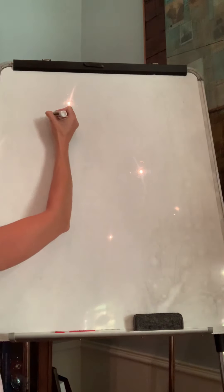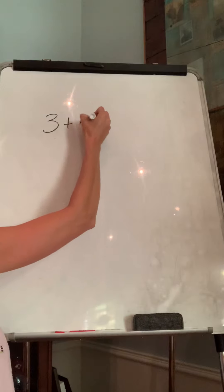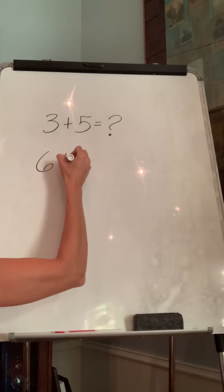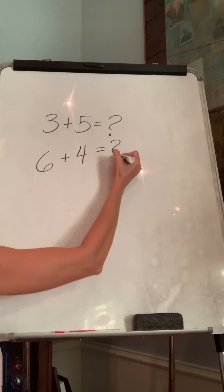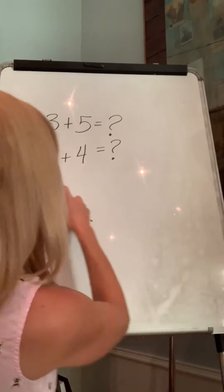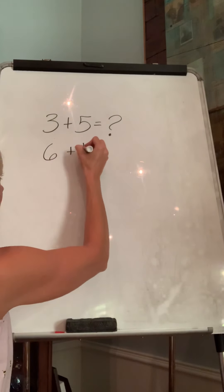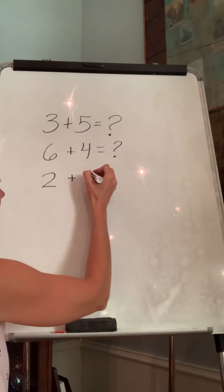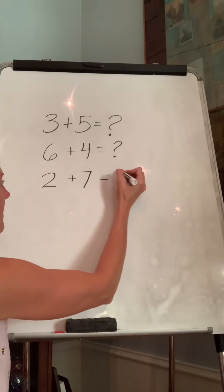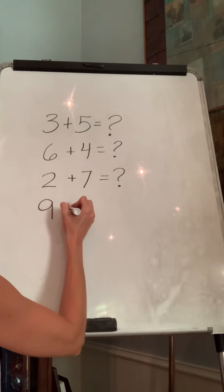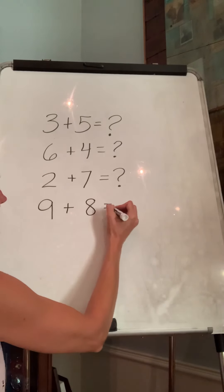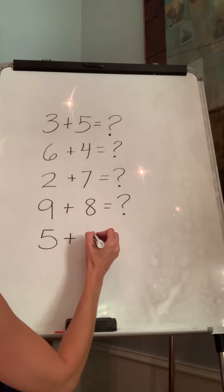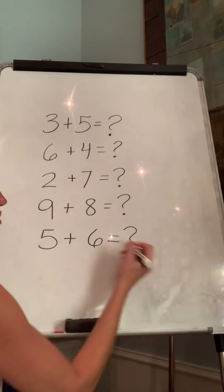Okay. So let's say we're going to give you three plus five. What does that equal? Okay. How about six plus four? How about two plus seven? How about nine plus eight? And how about five plus six?